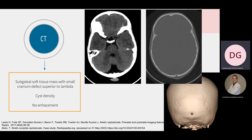On CT, the finding is a subgaleal soft tissue mass with a small cranial defect superior to the lambda. It has cyst density and does not enhance when contrast is used.